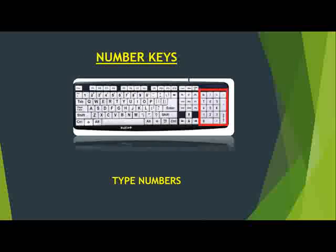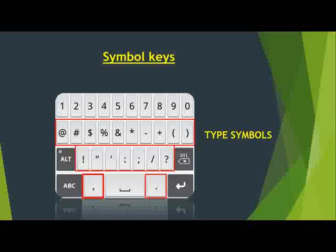The first group is number keys. Number keys type numbers. Next is symbol keys. Symbol keys type symbols — like @, #, and other symbols. If you want to insert these symbols in our document, we can use symbol keys.